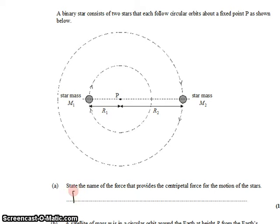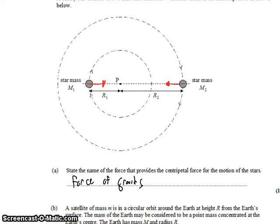So it's the force of gravity that pulls star M1 towards P and star M2 towards P. They're equal and opposite forces. Now the force is inwards toward the center, so that makes it a centripetal force. Which means that the force of gravity is a centripetal force.